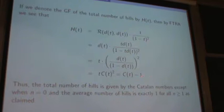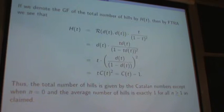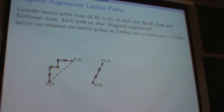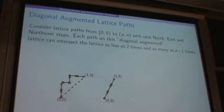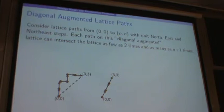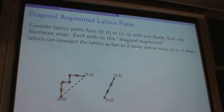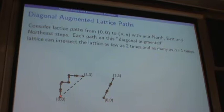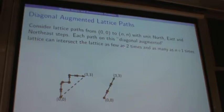We can also apply this to the so-called diagonal augmented lattice paths. These are lattice paths from (0,0) to (N,N) with not only north and east steps, but also a north-east diagonal step. Each path on this diagonal augmented lattice can intersect the diagonal as few as two times — only at the beginning and at the end — or as many as N plus one times, meaning the path is always along the diagonal. These are the two extreme cases.